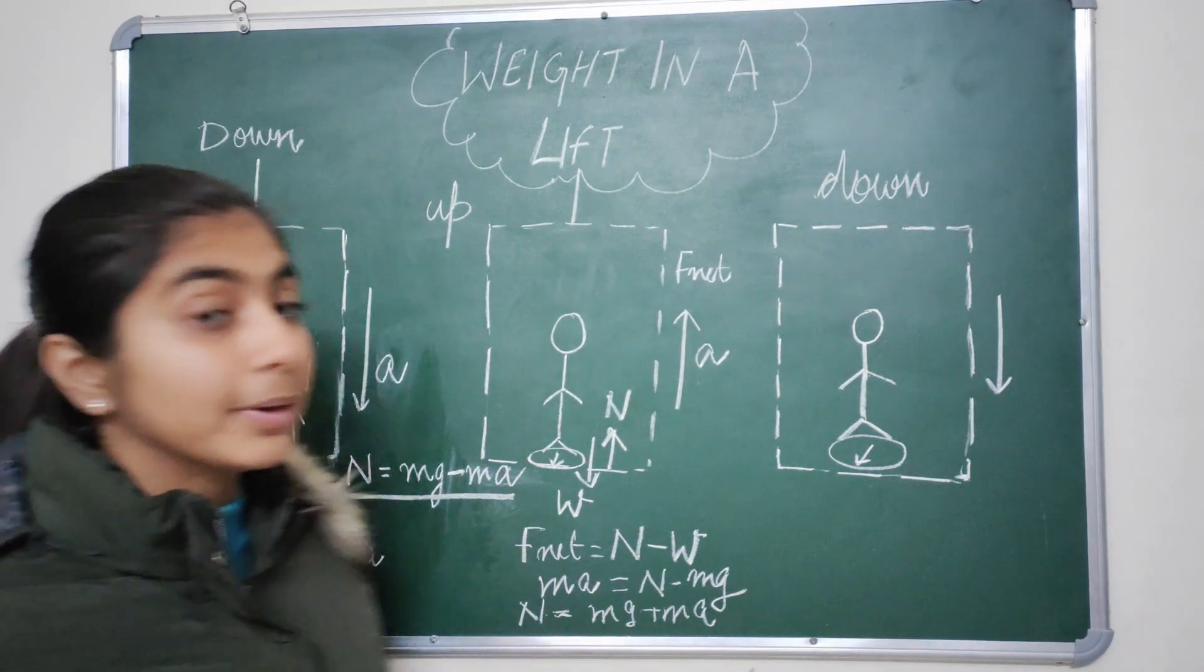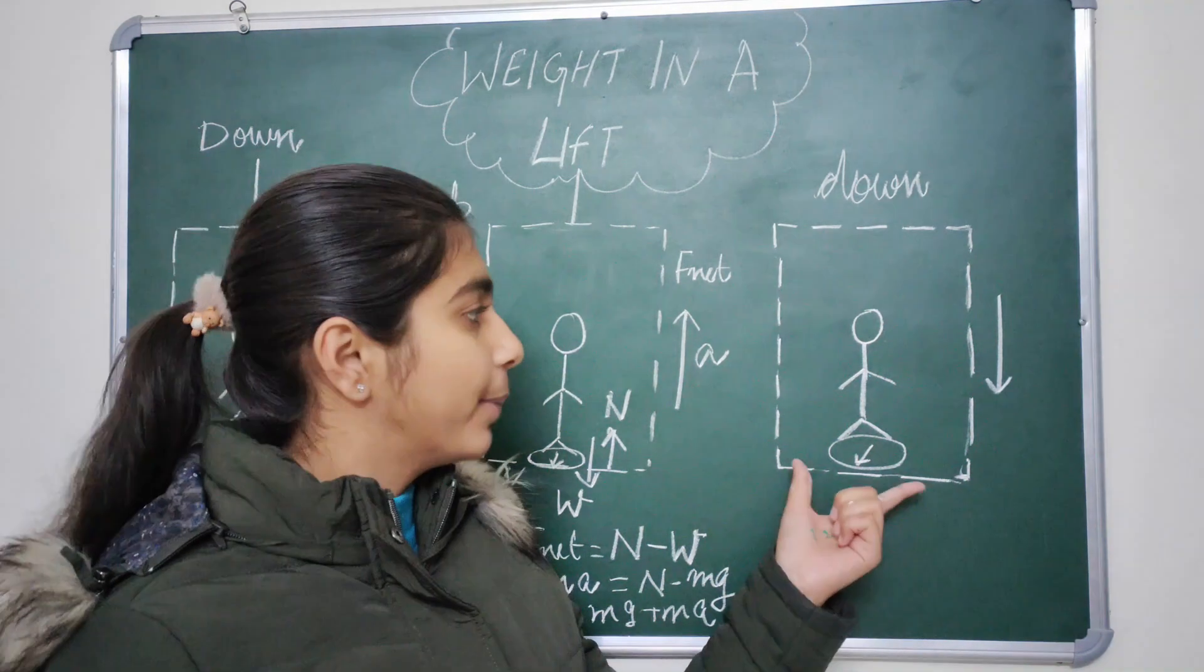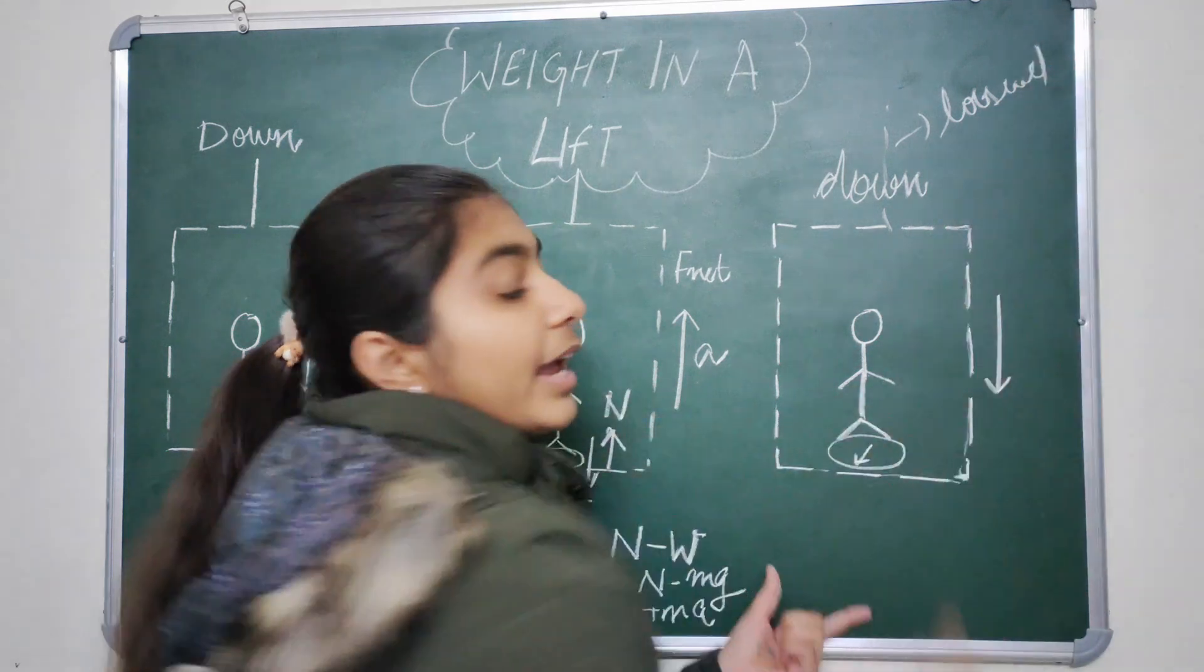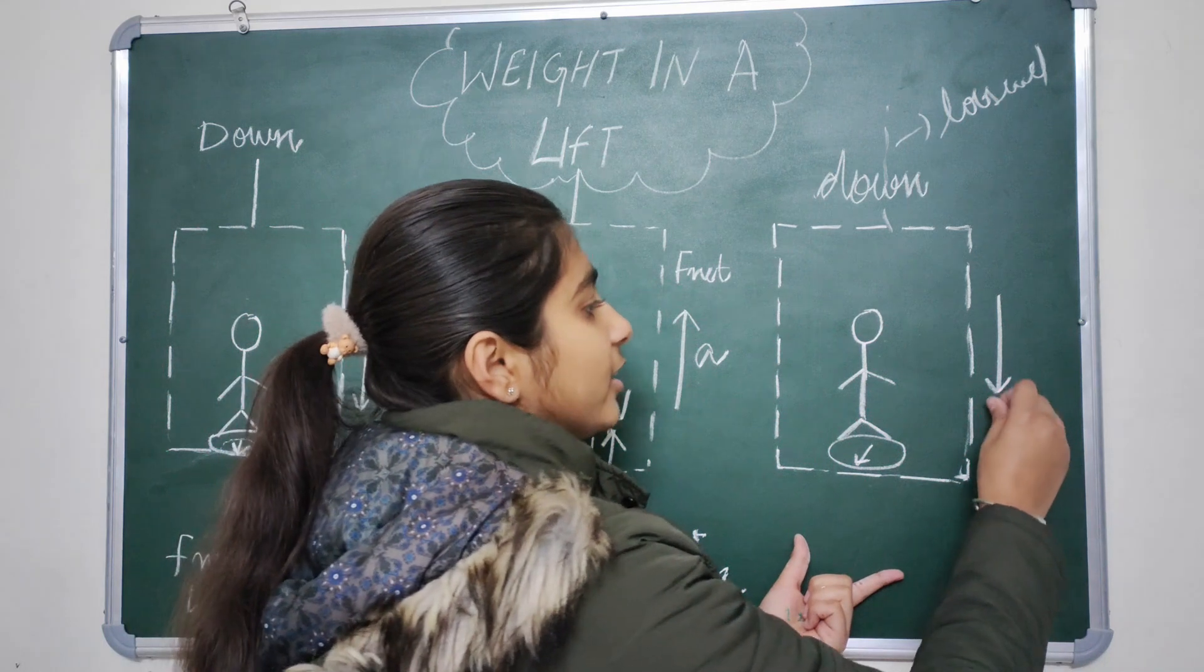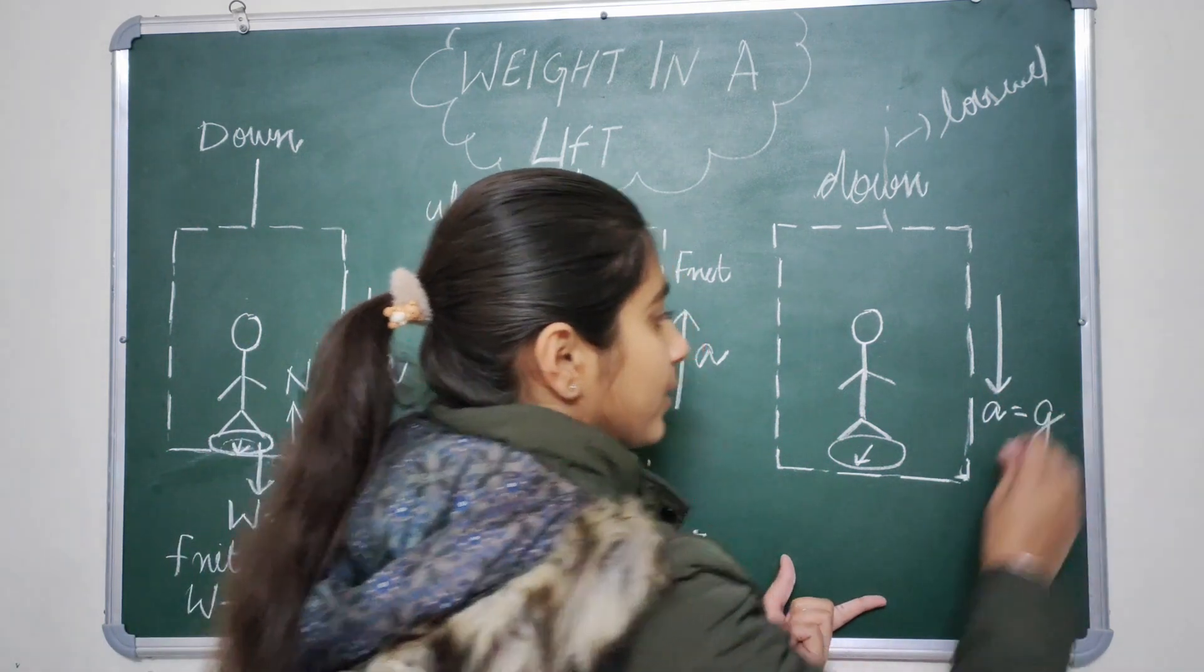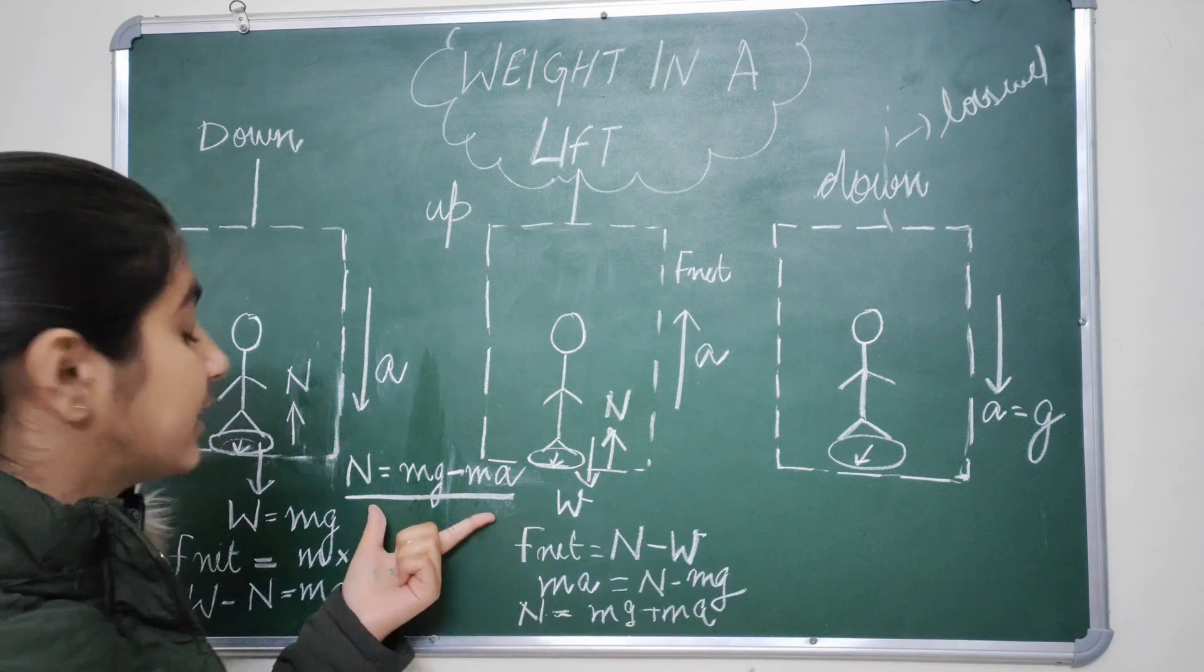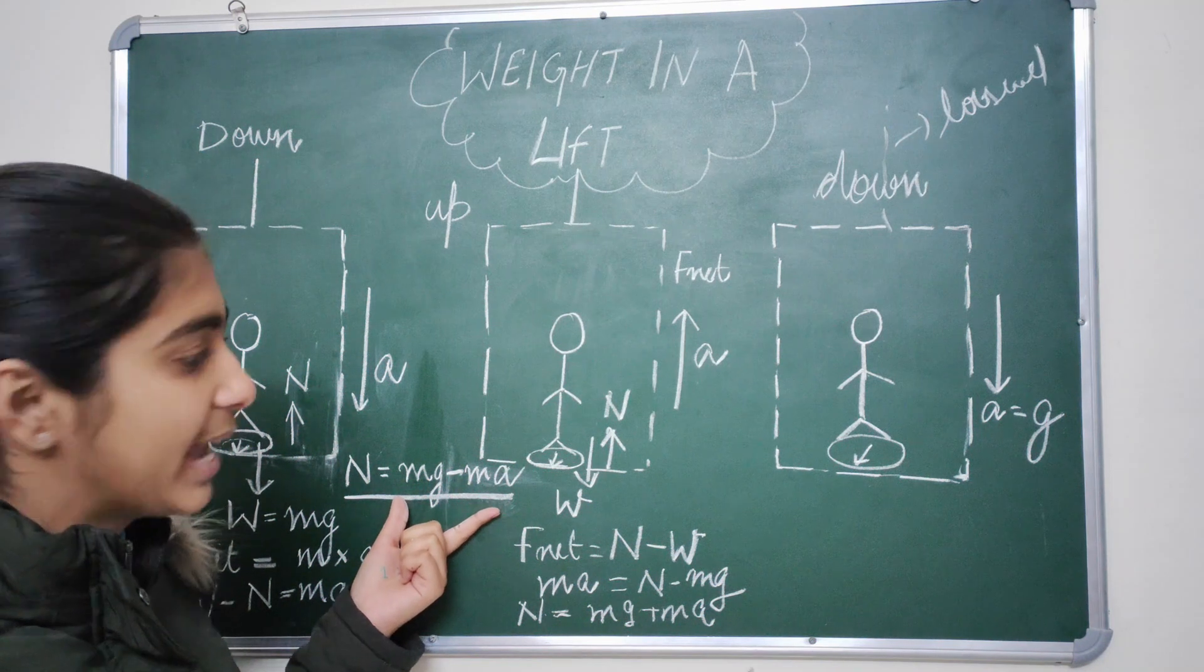Let us see what happens when the rope breaks or when the rope of the lift gets loosened. In that case, the lift travels with the acceleration which is equal to the acceleration due to gravity. Applying the same case as we did in the first one, the normal reaction or the weight of the body is simply equals to MG minus MA.